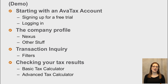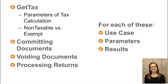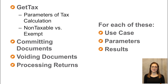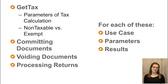Now that we've talked about your admin console, let's talk about the methods you might use. The biggest and most important one is going to be Get Tax. We'll talk about parameters of tax calculation as well as some results — non-taxable zeros versus exempt zeros. We'll also talk about committing documents, voiding documents, and processing returns. For each of these, I'm going to talk about the use case, the parameters you're going to need to call these methods, and the results you can expect.